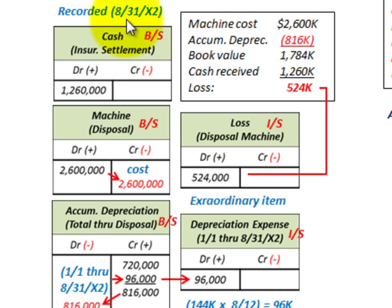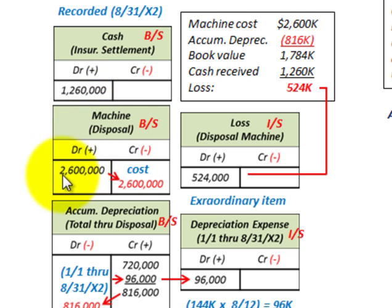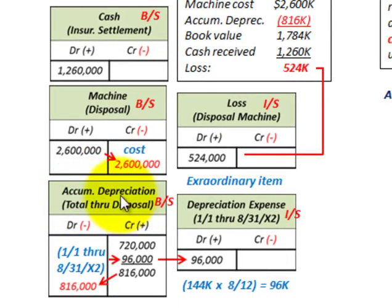For the insurance settlement, cash would be increased by the amount of the insurance settlement. For the machine itself, it's carried at a cost amount and that would be removed off the books, since the machine is being disposed of. We'd also have our accumulated depreciation to take off the books. But first we have to calculate the depreciation through the date of this disposal, the casualty.